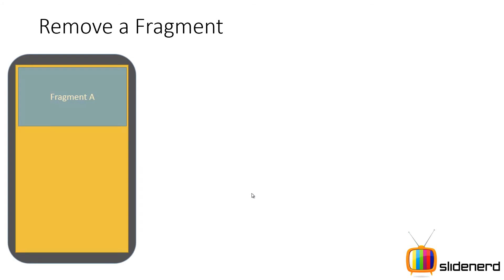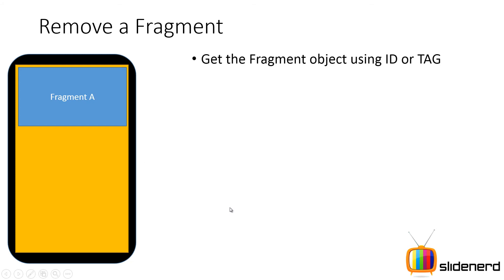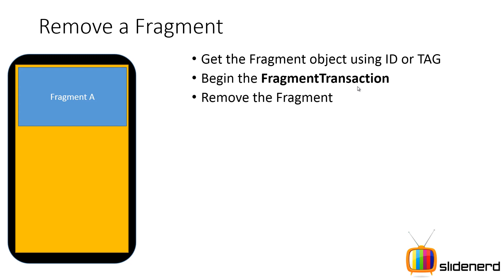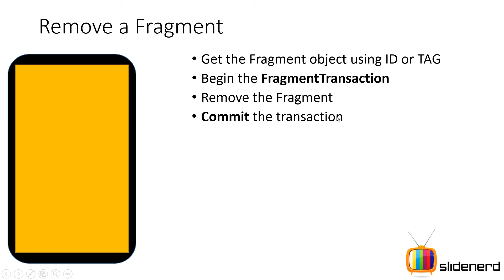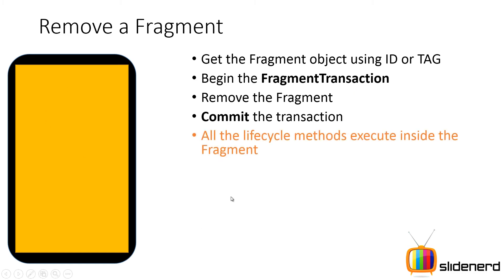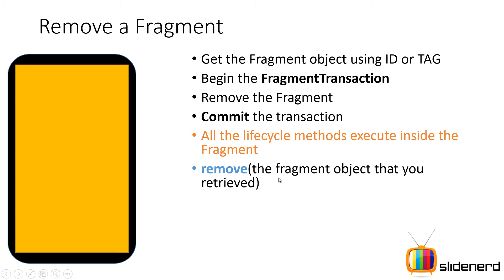Let's talk about removing a fragment. Say you have fragment A on the screen and you want to remove it. First, get the fragment object using the ID or tag — recall we supplied a tag while adding. Then begin the transaction, remove the fragment, and commit. As soon as you commit, you see the changes on screen, and the destruction lifecycle methods like onDestroyView, onDestroy, and onDetach all get executed.